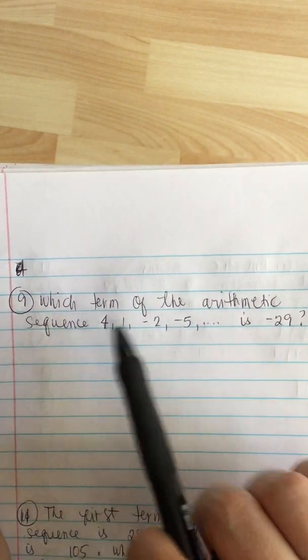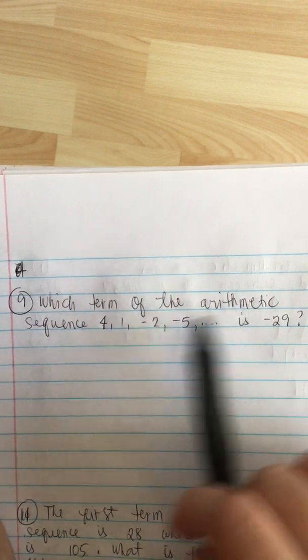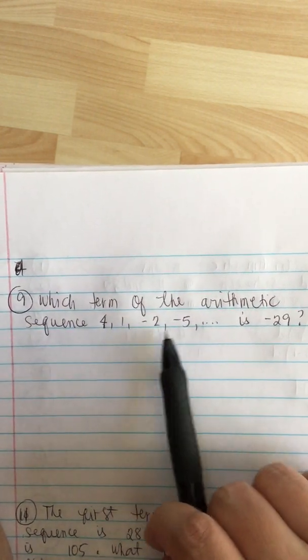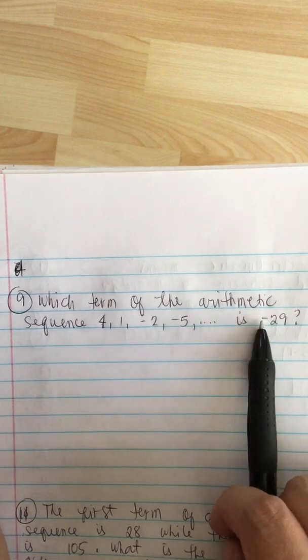So we have an arithmetic mean problem again. Which term of the arithmetic sequence 4, 1, minus 2, minus 5, etc. is minus 29?